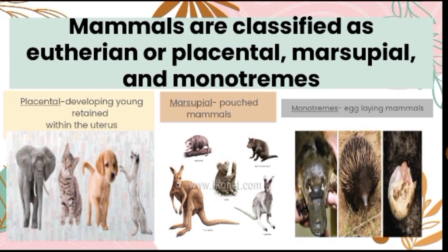When we say placental, these are the animals that develop their young within their uterus. Some examples are the cat, dog, and others. Marsupials are animals that carry their young in a pouch. And monotremes are the animals that lay eggs.